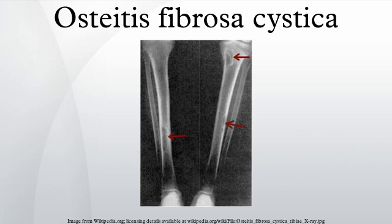Osteitis fibrosa cystica has long been a rare disease. Today, it appears in only 2% of individuals diagnosed with primary hyperparathyroidism, which accounts for 90% of instances of the disease. Primary hyperparathyroidism is three times as common in individuals with diabetes mellitus. The hospitalization rate for hyperparathyroidism in the United States in 1999 was 8.0 out of 100,000. The disease has a definite tendency to affect younger individuals, typically appearing before the age of 40, with a study in 1922 reporting that 70% of cases display symptoms before the age of 20 and 85% before 35.